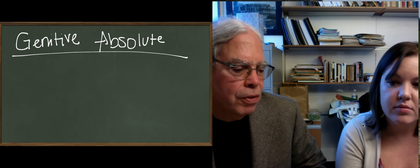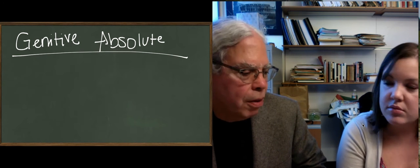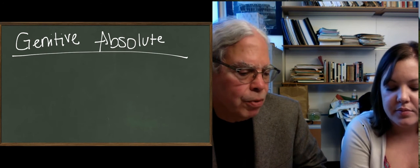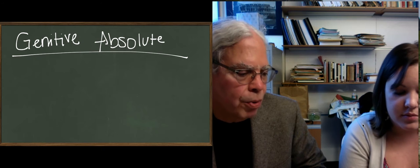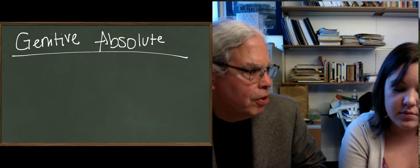In grammatical terms, that's what this is. It's an absolute construction, one that's grammatically separated from the rest of the sentence. And when we're talking about genitive absolutes, we're talking about a clause, a subordinate clause, that has no grammatical links to the rest of the sentence.